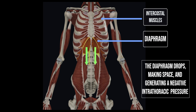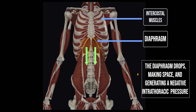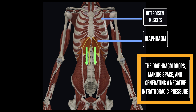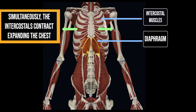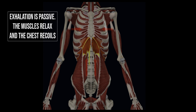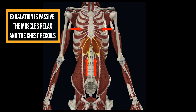Instead, air naturally moves into the lungs through negative pressure generated by the contraction of the respiratory muscles. Specifically, the diaphragm drops, pulling air into the tracheobronchial tree, while the intercostal and assisting muscles expand the chest to accommodate the lungs during inhalation. Exhalation during both spontaneous breathing and mechanical ventilation is passive — the muscles relax and the chest recoils.